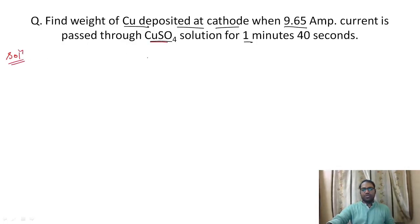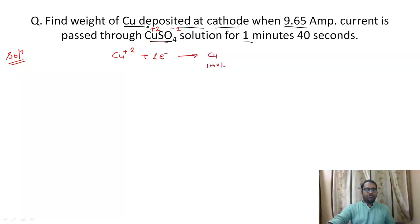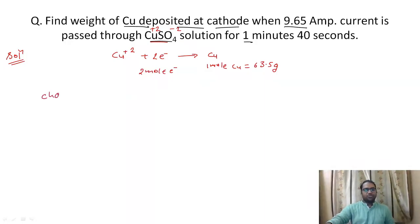In this question we have copper sulfate solution. Sulfate has a minus two charge, so copper has a plus two charge. To deposit one mole of copper — which equals 63.5 grams, the molar mass of copper — we need two moles of electrons. The charge on one mole of electrons is 96500 coulombs.